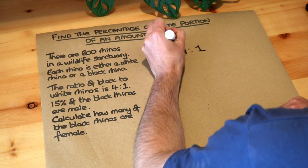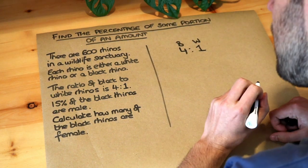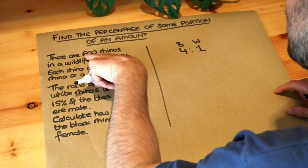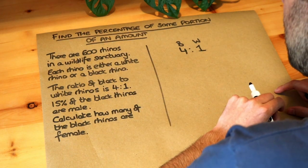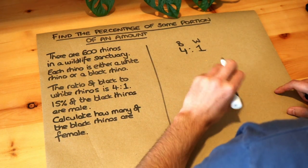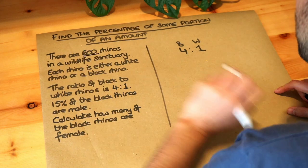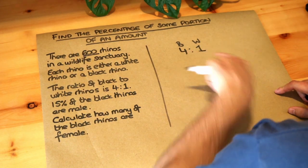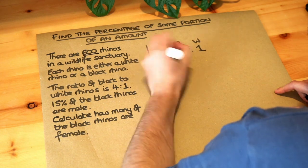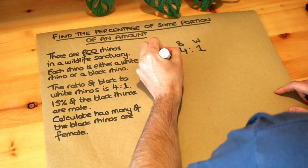So the ratio of black to white, let's just write that information, black to white is four to one and in total there is 600 rhinos. Now we've seen before with ratios that if 600 is the total number of rhinos then we need to think about the total number of parts in the ratio. So the total number of parts, four plus one, is five.